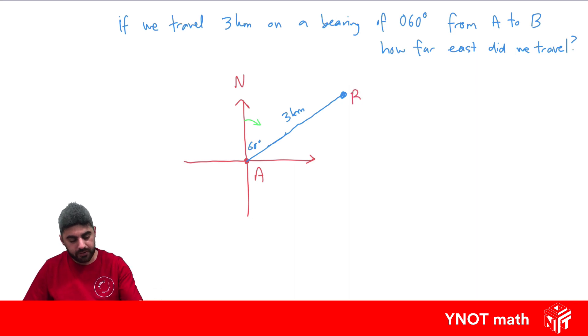So this would be point B. East is in this direction, and we want to know how far east did we travel. When we want to find how far east we've travelled, we want to know the horizontal distance towards east.